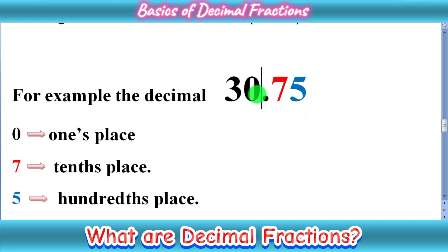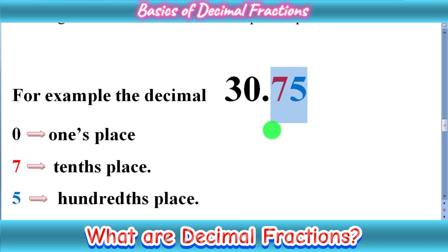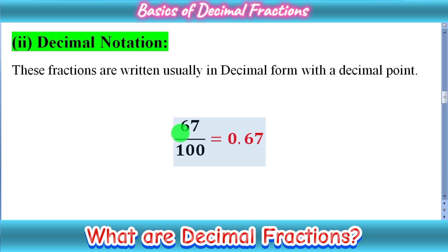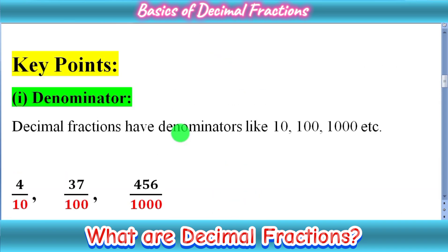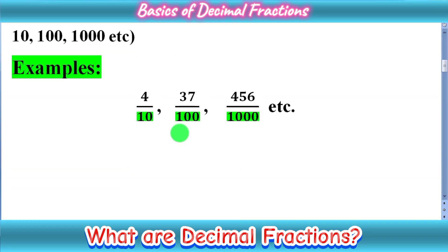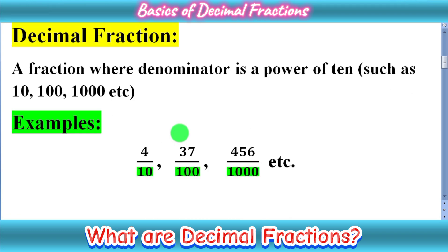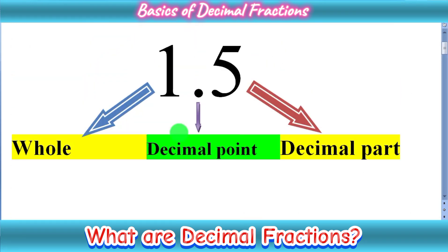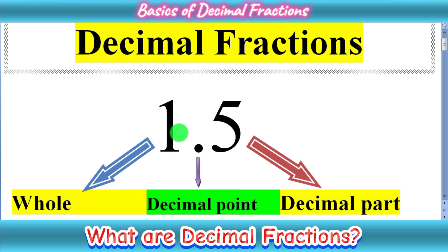This is the basic concept of a decimal number: from the decimal point to the left we have whole numbers, and from the decimal point to the right we have the decimal part or fractional part. We can simply divide these numbers by a power of ten. I hope this was helpful — what are decimal fractions. In the next videos we will discuss how to convert decimal fractions into decimal form and further topics, including operations on decimal fractions. Thanks for watching, and don't forget to subscribe to my channel.